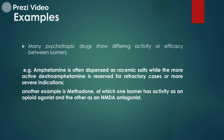Many psychotropic drugs show differing activities or efficacies between isomers. For example, amphetamine is often dispensed as a racemic salt, with the more active dextroamphetamine reserved for refractory or more severe indications. Another example is methadone, of which one isomer has activity as an opioid agonist and the other as an NMDA antagonist. These are classic examples to remember.